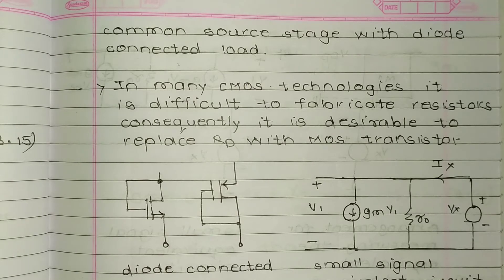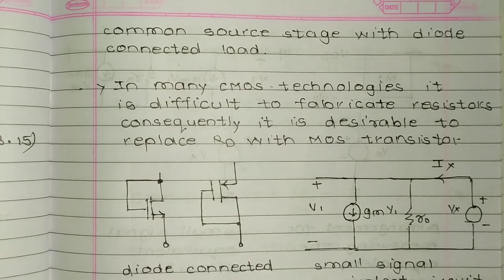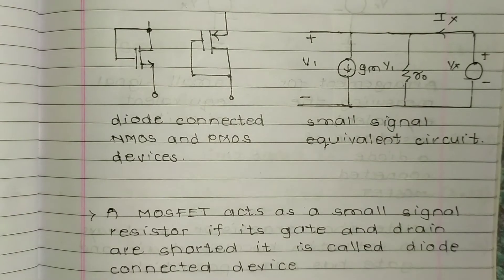We have decided to use MOSFET instead of resistor. A MOSFET acts as a small signal resistor if its gate and drain are shorted. It is called a diode connected device.